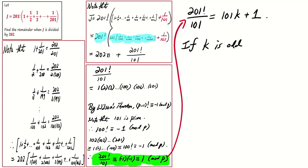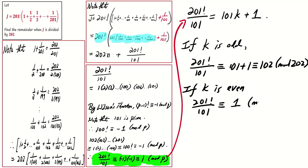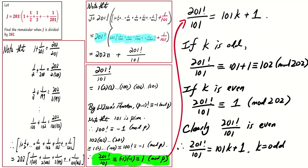If k is odd, then this number is congruent to 101 mod 202. But if k is even, it is congruent to 1 mod 202. It is clear that 201 factorial over 101 is an even number. So, we conclude that it is 101k plus 1 for some odd k. Hence, it is congruent to 102 mod 202.